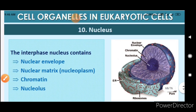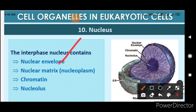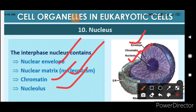The interphase nucleus has four main components: the nuclear envelope, nuclear matrix, chromatin, and nucleolus. In the diagram, the nuclear envelope is the nuclear membrane, the thread-like structures are the chromatin, the central part is the nucleolus, and the interior space is the nuclear matrix.